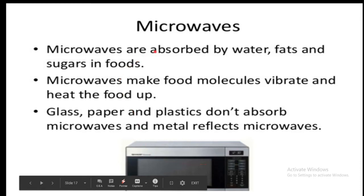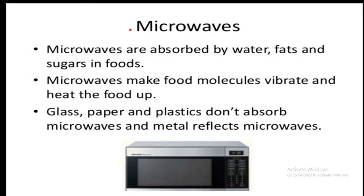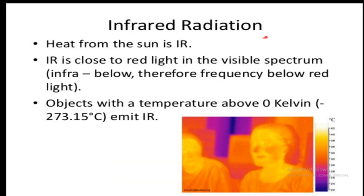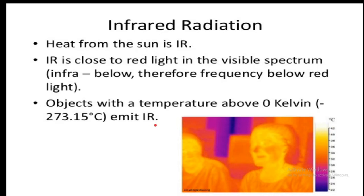Microwaves have higher wavelength, lower energy, and lower frequency. Infrared radiation is the heat coming from the sun and it is close to red light in the visible spectrum. Infra means below, so frequency below red light is called infrared light. Objects with a temperature above zero Kelvin emit infrared radiation.